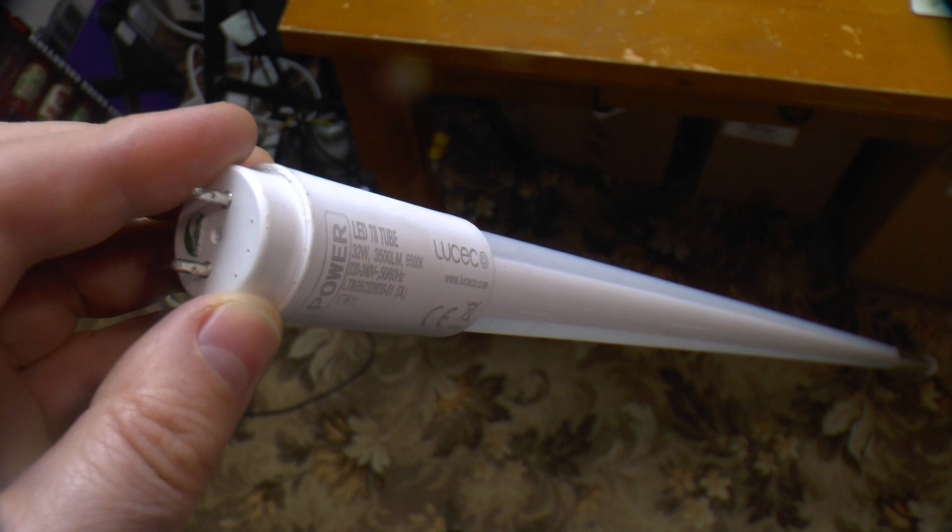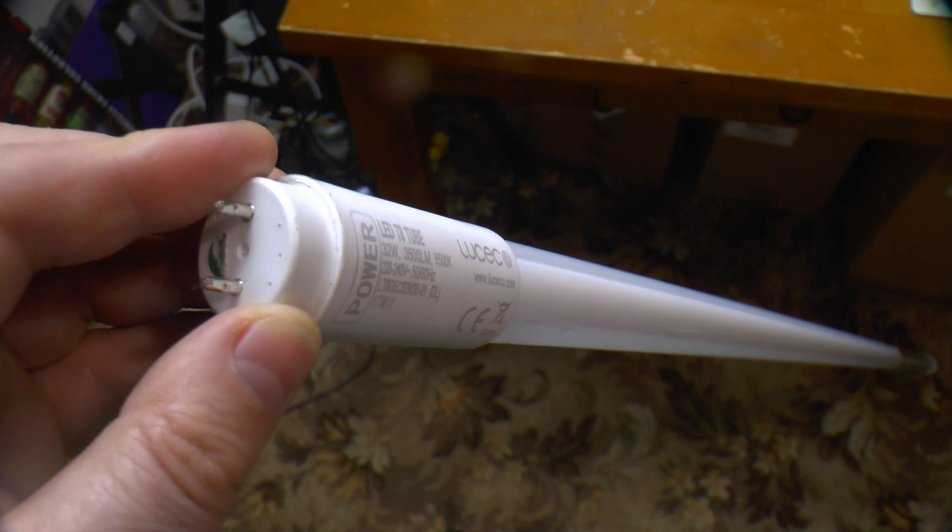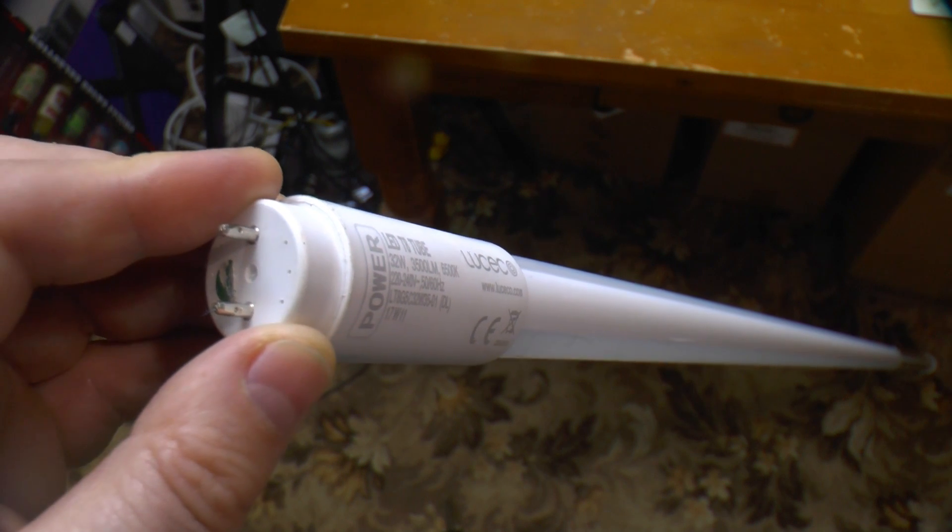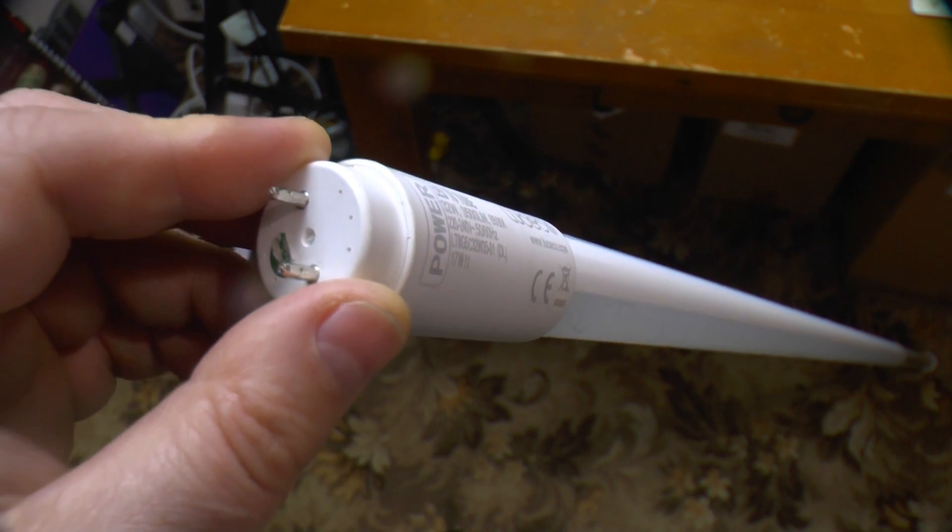Greetings. What I've got for you today is a Lusico 5-foot LED strip light meant to replace a conventional fluorescent tube. Some of you may remember I took apart a LuxLite 6-footer a few years back. Let's see how this one differs.